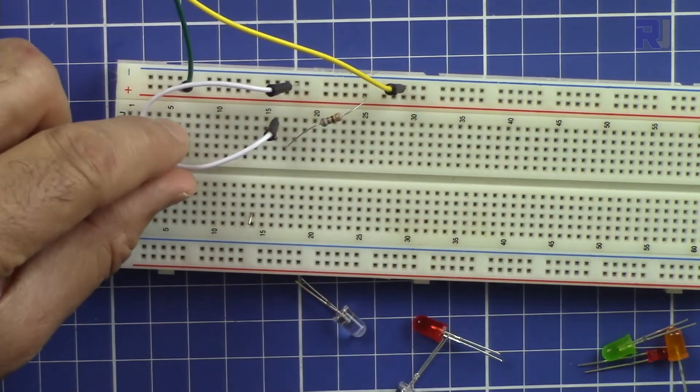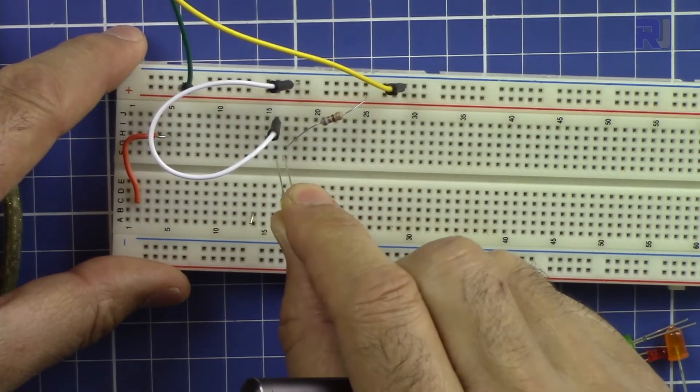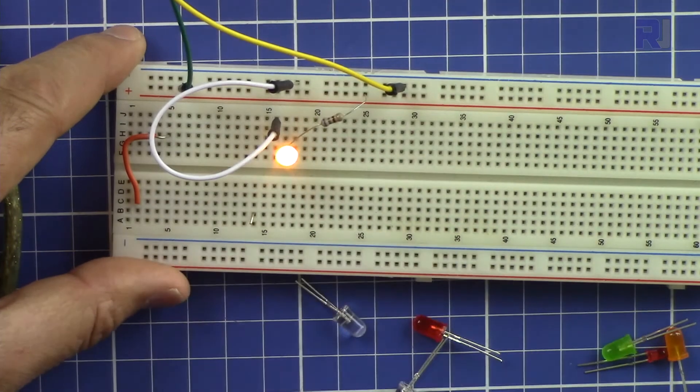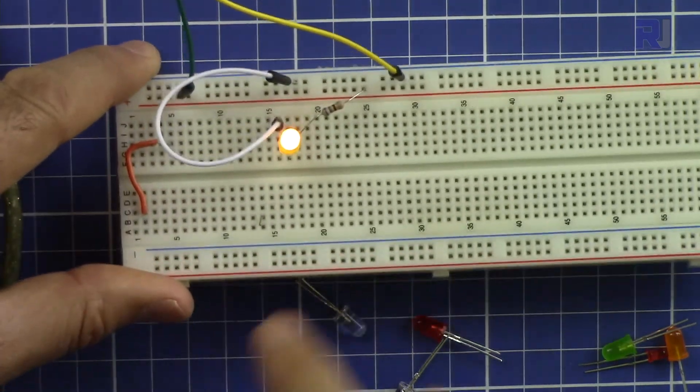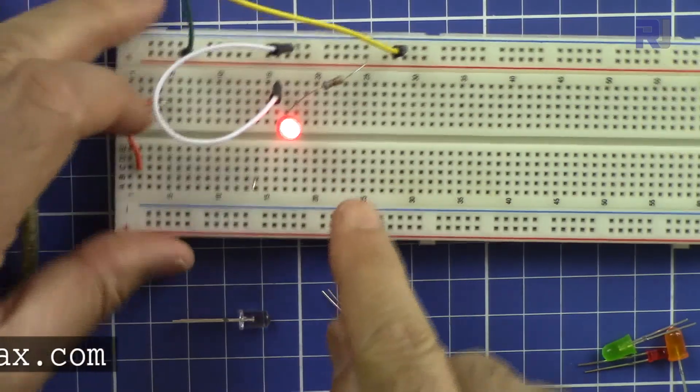I have a resistor here coming from positive, coming the same as the diagram, and the negative. What I do is I plug in the positive on this side and the negative on the other side, and you can see the orange LED is turned on.